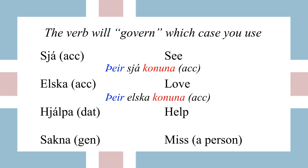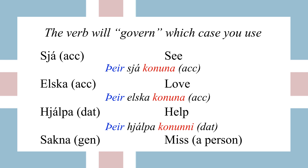The verb ad-hjallpa, which means to help, always takes dative after it. So whatever the object of help is — whether it's your mom, the world, or your grandmother — is going to be in dative. So 'ther-hjallpa kununi' — that's the dative form — means 'they help the woman.' The word sakna, which means to miss a person, is always in genitive. Whatever is being missed is always going to be in genitive. 'Ther-sakna kununar' — that's the genitive form.